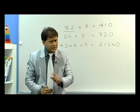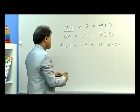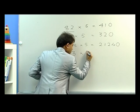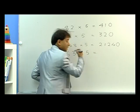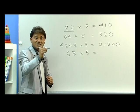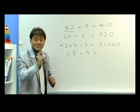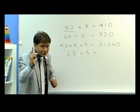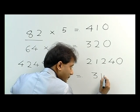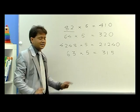What happens if the number is not divisible by 2? Let's take an example: 63 to be multiplied with 5. What is half of 63? It is 31.5. So I write 31.5, and now just don't write the decimal point — that's the answer.